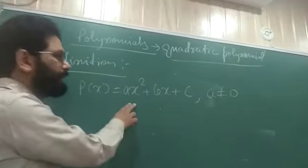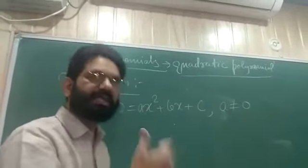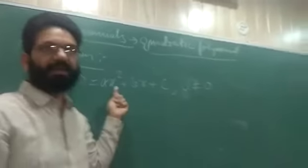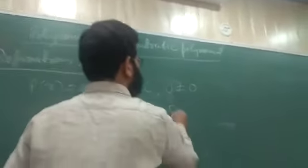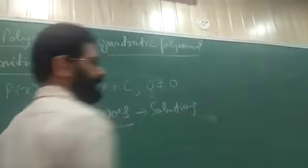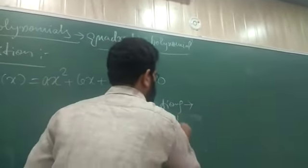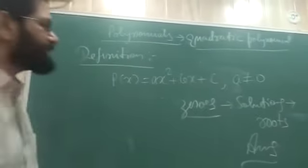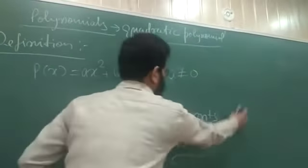The number of zeros a polynomial contains is decided by its degree. Since we are discussing quadratic polynomials of degree 2, they will contain two zeros. The words zeros, roots, solutions, and answers are all synonyms here — especially zeros and roots are the two most commonly used terms.